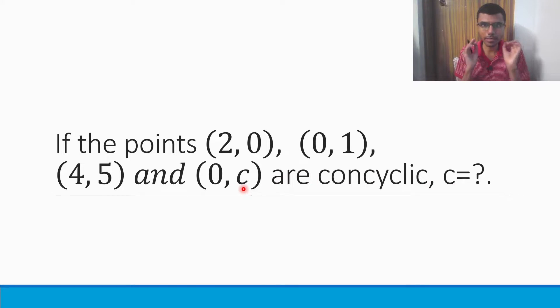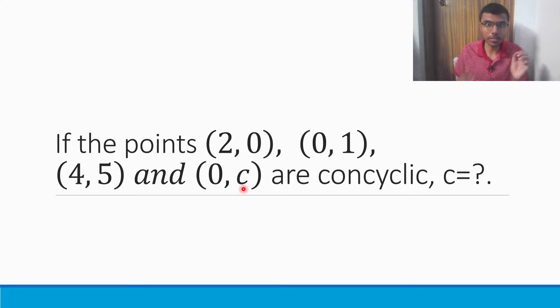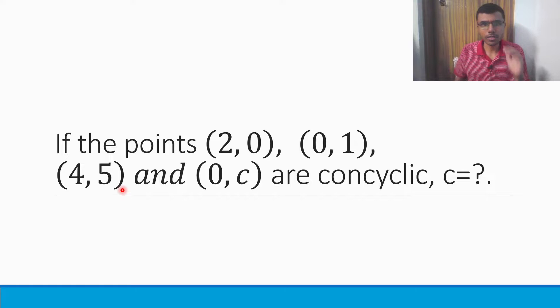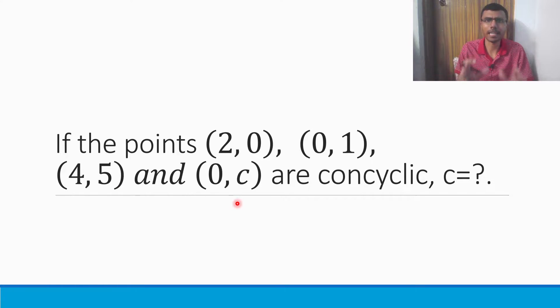Now, the strategy is that I'm going to find out the equation of the circle passing through the first three points. And then once I get the equation of the circle, I'm going to substitute this fourth point so that I can get the value of C. As simple as that. Now let's get started.